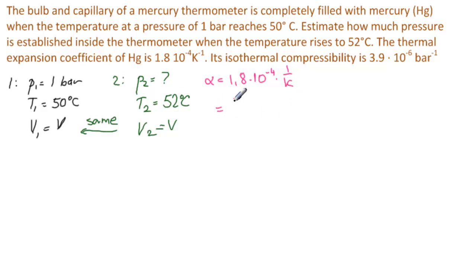Its formula is 1 over V, delta V, delta T. Notice that the V units cancel, and the T is like that. So this is under a constant pressure, and the unit is 1 over K.